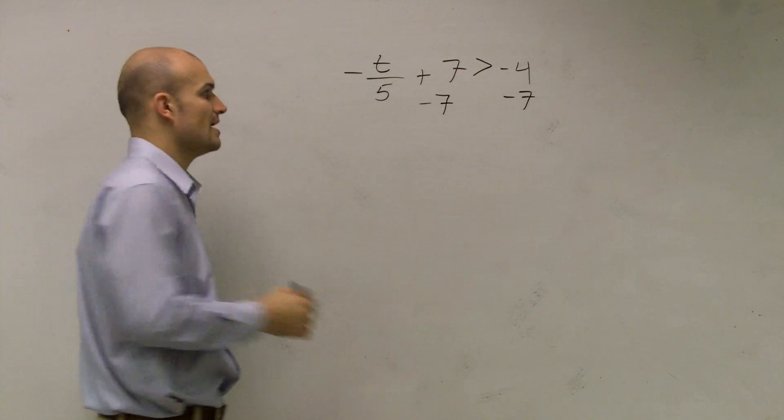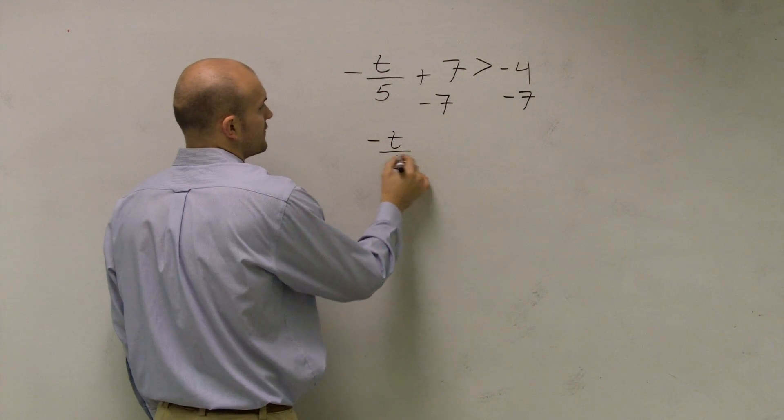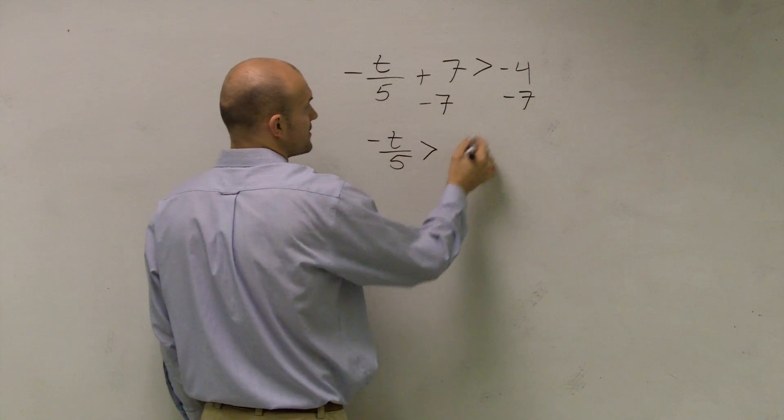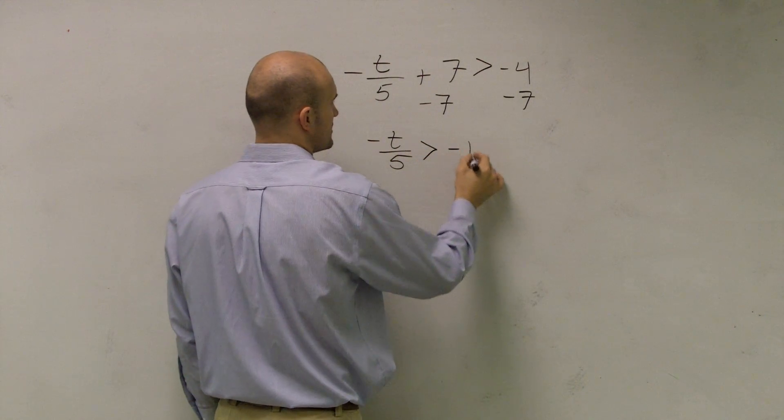Then I have negative t over 5 is greater than negative 11.